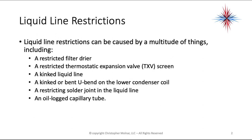A kinked liquid line is normally very easy to find — for example, someone hit it with a lawnmower. A kinked or bent U-bend at the lower condenser coil is also visual. A restricted solder joint in the liquid line may occur if someone used too much braze during assembly, or forgot to remove shipping caps. This should have been found at system startup, but look for temperature differences. A restricted solder joint will very often show up as frost on the liquid line because it's actually metering.